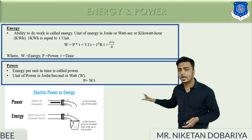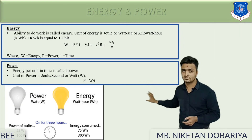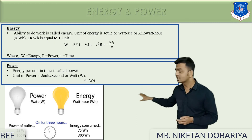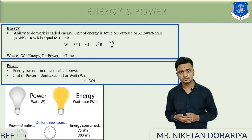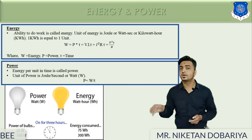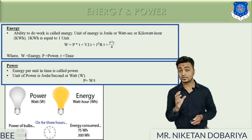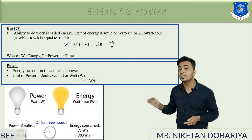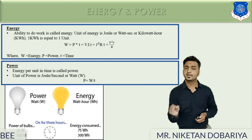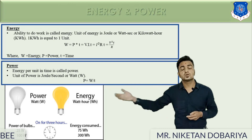We can relate energy and power using an electrical circuit example. Here we have a bulb with power ratings of 25 watts and 100 watts, and let's say we use each bulb for 3 hours. If we use the 25-watt bulb for 3 hours, it will consume a total of 25 × 3 = 75 watt-hour energy. Similarly, if we use the 100-watt bulb for 3 hours, it will use 300 watt-hour energy. So power is how much energy is provided to a circuit in a particular time.